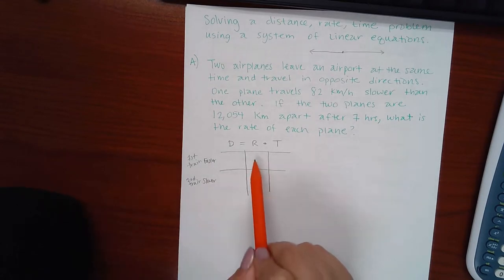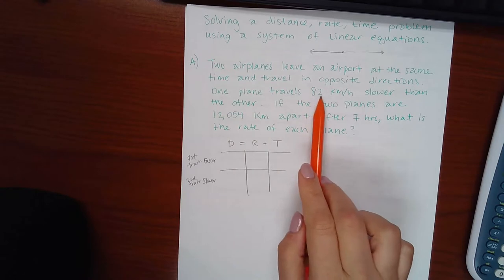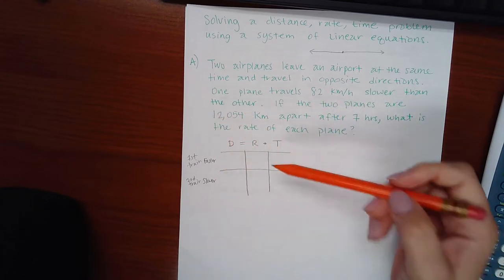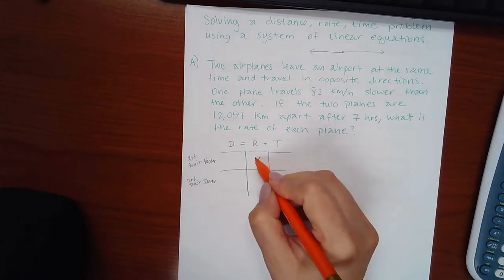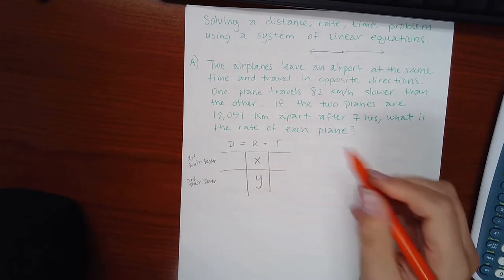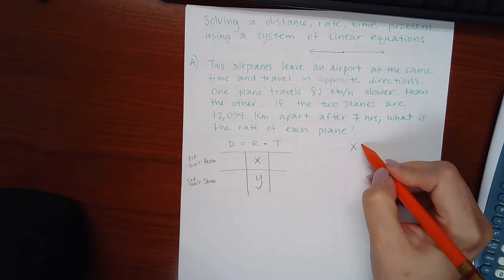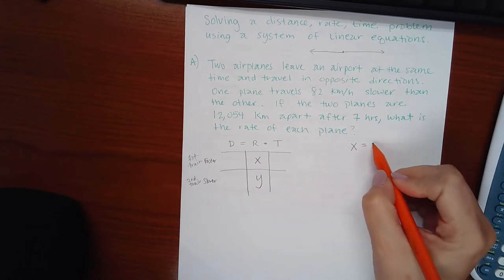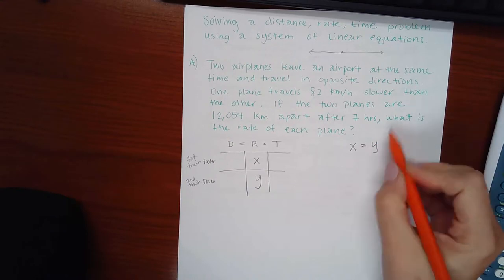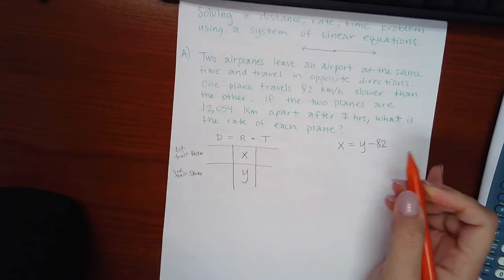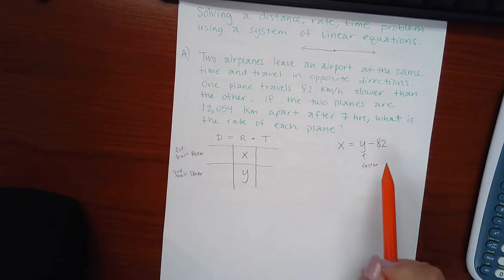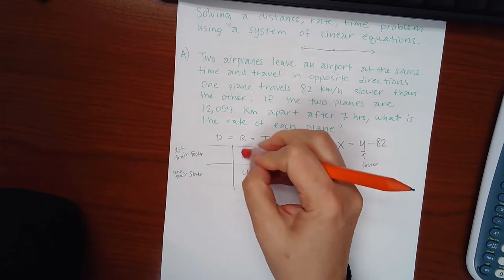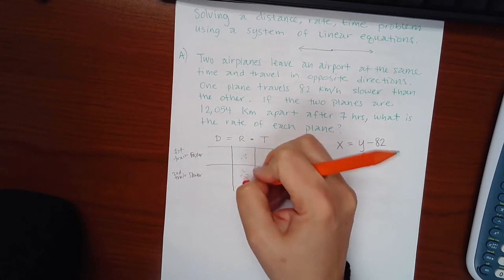And I do know something about the rates. Okay, so it says one plane travels 82 kilometers slower than the other. Now I could put the x for either one of them and then the y for the other. But what I do know is that one of them is going to be the second one minus 82. Now that means that this one would have to be the faster rate. So because the slower rate would equal the faster one minus 82, right?